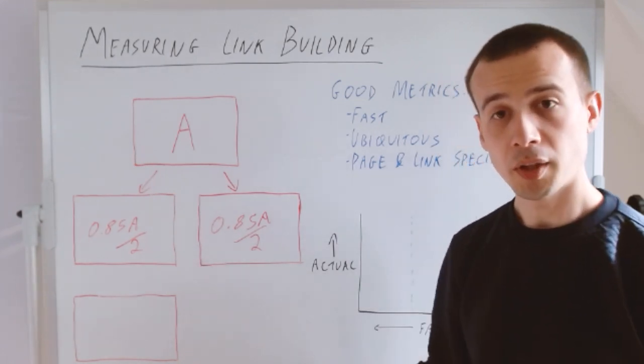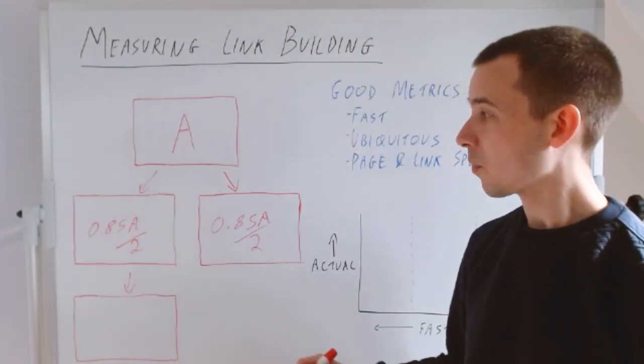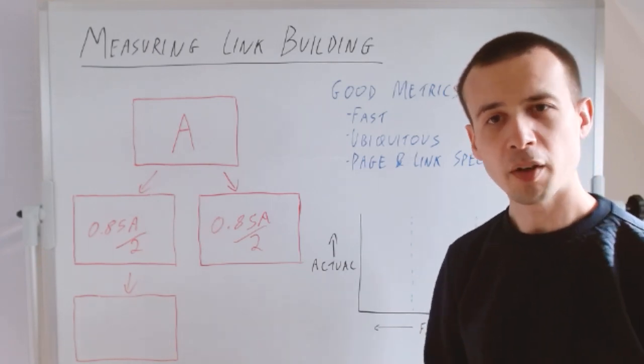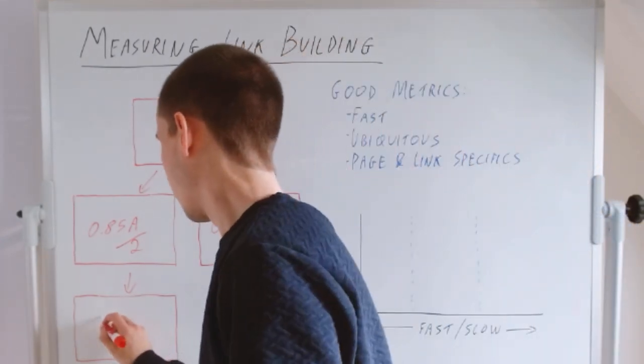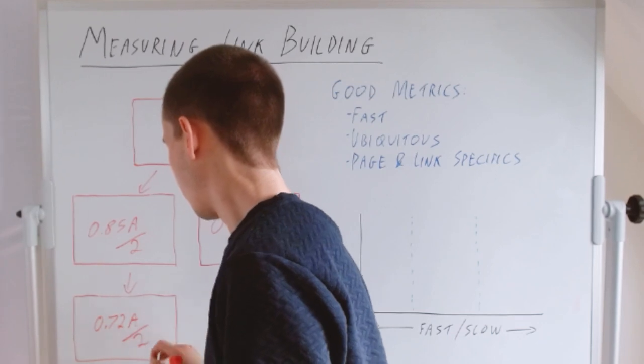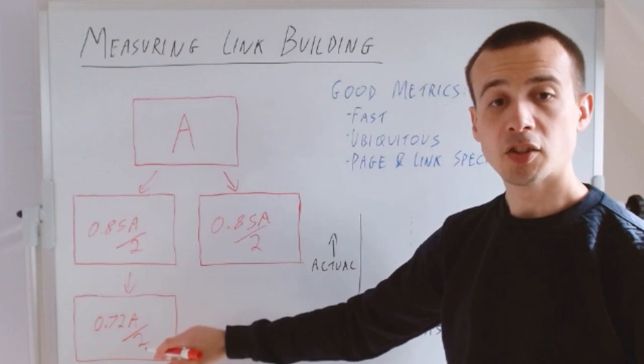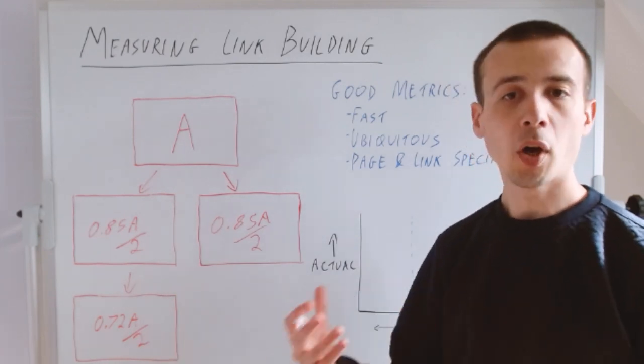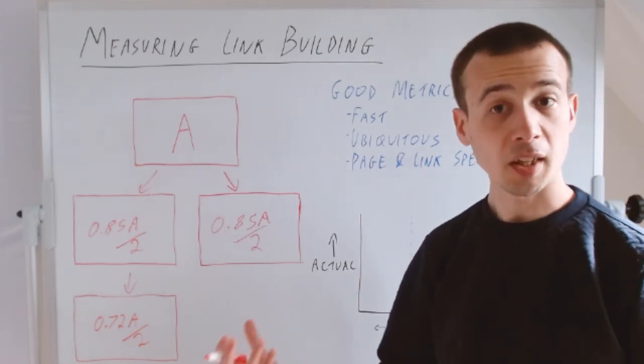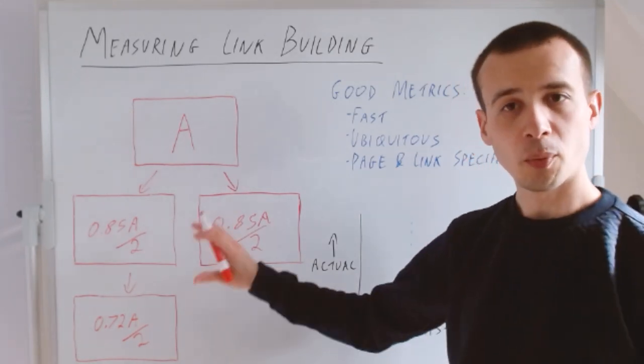Lastly—I promise the algebra will stop soon—what if we had another jump in this system? In this case, this dampening happens again, so 0.85 times 0.85 for this page. It's got an even lower probability. This is why as technical SEOs we sometimes get caught up with things like chain redirects.